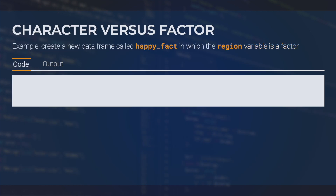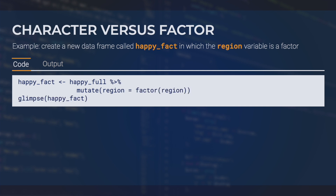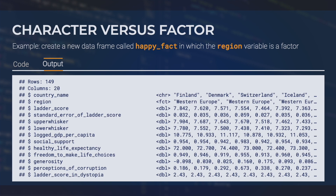Let's convert this to a factor to see what the benefits of doing this are. We'll create a new data frame called happyFact that is identical to happyFull, except that the region variable has now been converted to a factor. We can use the factor function within the mutate function like this. When we glimpse this new data frame, we see that region has been converted to a factor variable, indicated here by FCT.